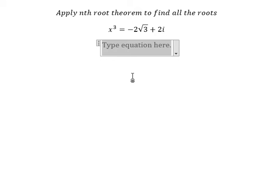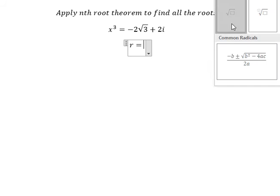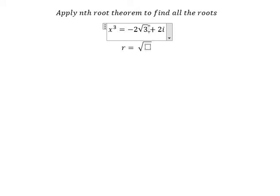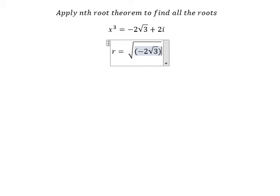First we need to find the value of r. In here we have negative 2 square root of 3 with the square and number 2 with the square, and we can get the answer that's about number 4.